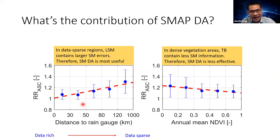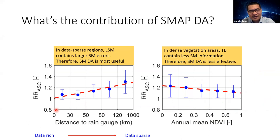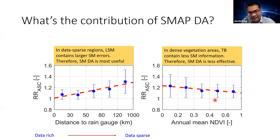We can also look at that map differently by grouping pixels according to their distances to rain gauges — data-rich regions on the left and data-sparse on the right. We find a positive relationship between the contribution of SMAP data assimilation and the distance to the gauge, consistent with our previous results. We can do the same thing for EVI and find a negative relationship, which also makes sense: in highly dense vegetated areas the soil moisture signal in SMAP is partly masked by vegetation, so data assimilation over these regions is less effective.